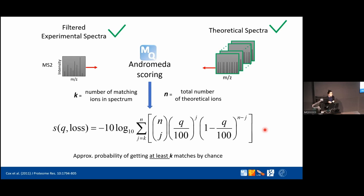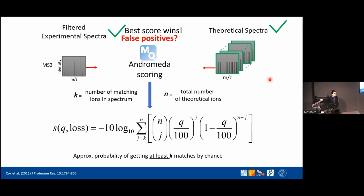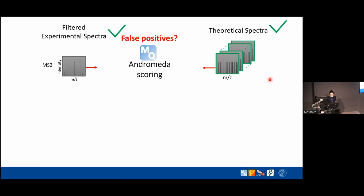Andromeda scoring is a great way to measure confidence in a match between two spectra, but it can still produce false positives. We need a way to filter those out. The method used — the most widely used approach in proteomics — is the target-decoy database approach.